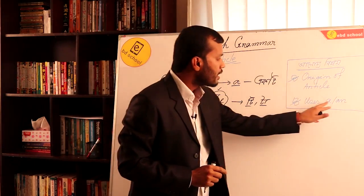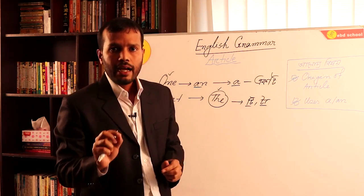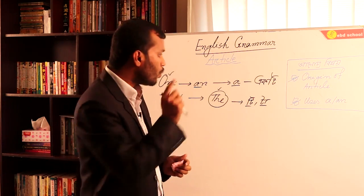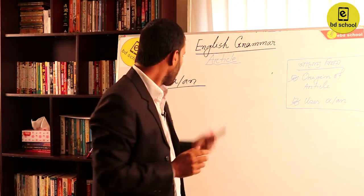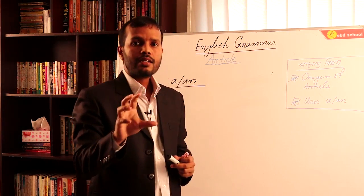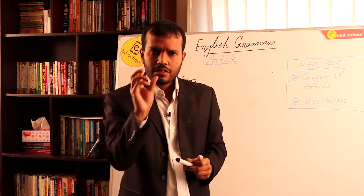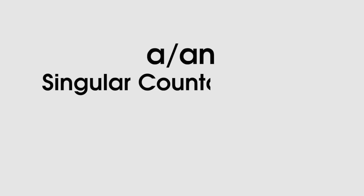First, A and AN — these are the two articles which are well-related. A and AN follow a specific rule and system. They are used before a singular countable noun.